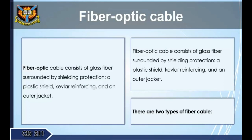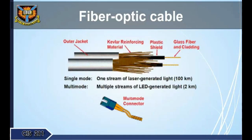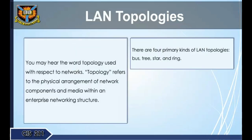Fiber optic cable consists of glass fiber surrounded by shielding protection, a plastic sheet, Kevlar reinforcing, and an outer jacket. There are two types of fiber optic cable.